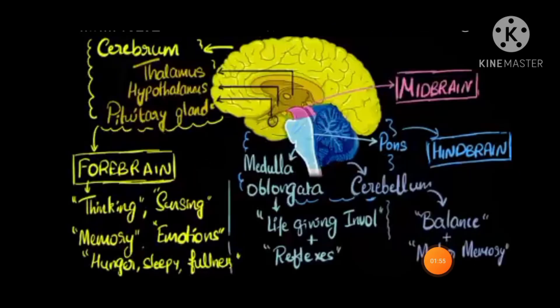Now let us discuss about the forebrain. It consists of the cerebrum, thalamus, hypothalamus, and pituitary gland, and it is related to the voluntary actions of our body such as thinking, singing, memory, emotions, hunger, sleep, and fullness.